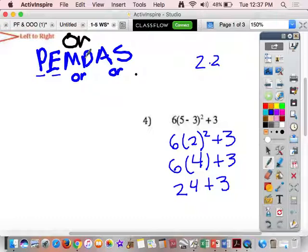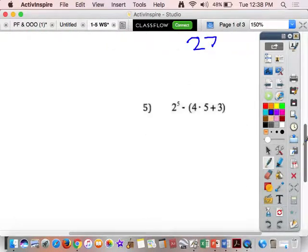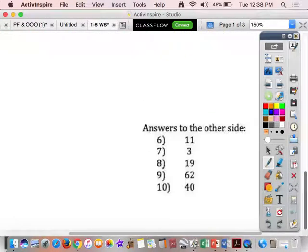Okay, do I have any more multiplication or division? No. Do I have any addition or subtraction? Yes. I go left to right. 24 plus 3 is 27. Okay. So, we're going to do a couple more. Let's go to the next page.